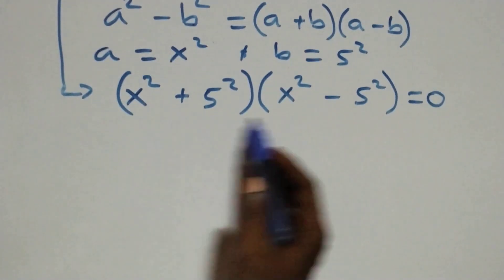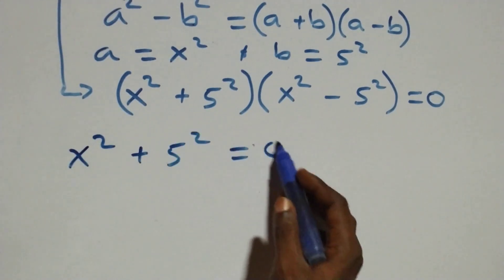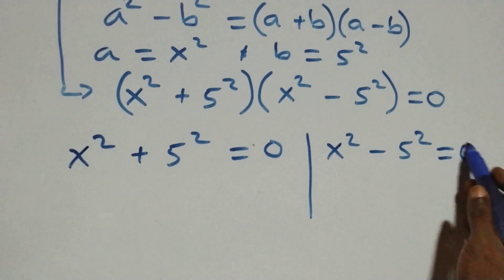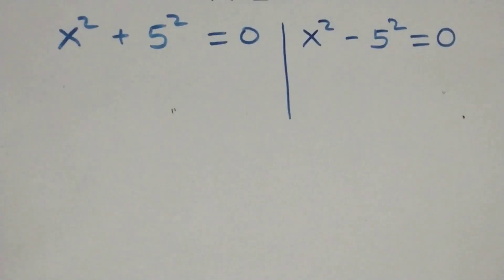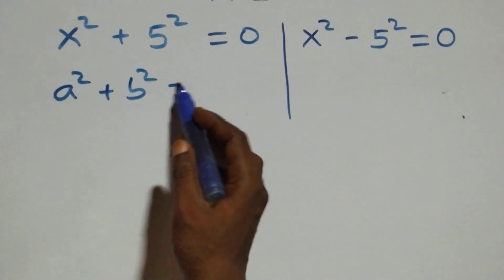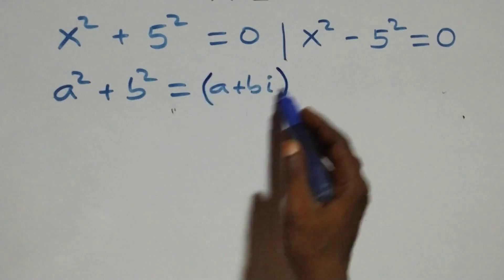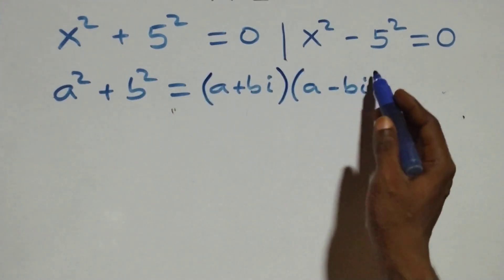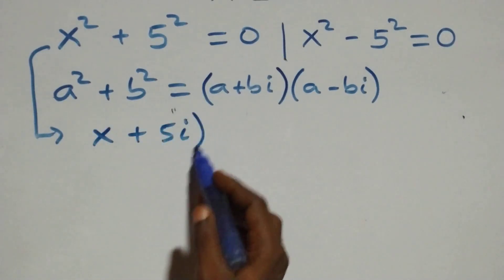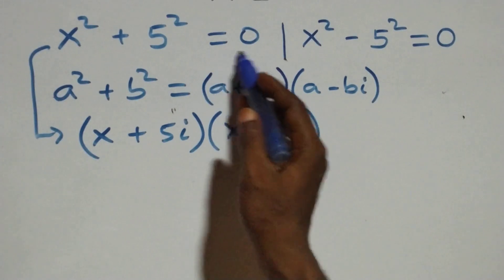We now have two possible cases: x squared plus 5 squared equals zero, or x squared minus 5 squared equals zero. Solving the first case, a squared plus b squared factors as (a + bi)(a - bi), so this becomes (x + 5i)(x - 5i) equals zero, giving x equals zero.